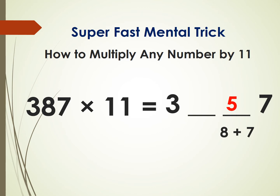Now add 3 and 8, you get 11, but we had 1 carried from the previous operation, so add that 1 also — you get 12. Write 2 and carry 1 to the next digit. The final answer is 4257. Thank you for watching this video.